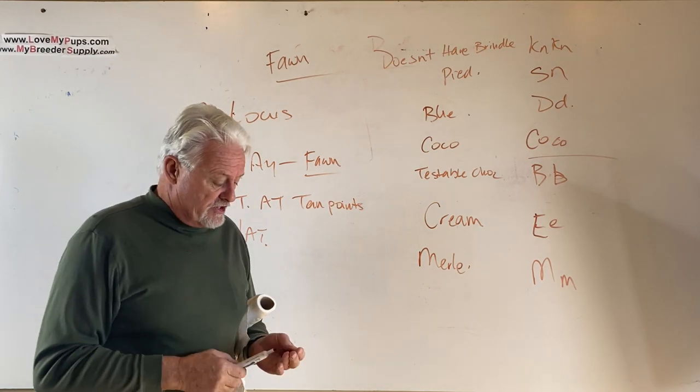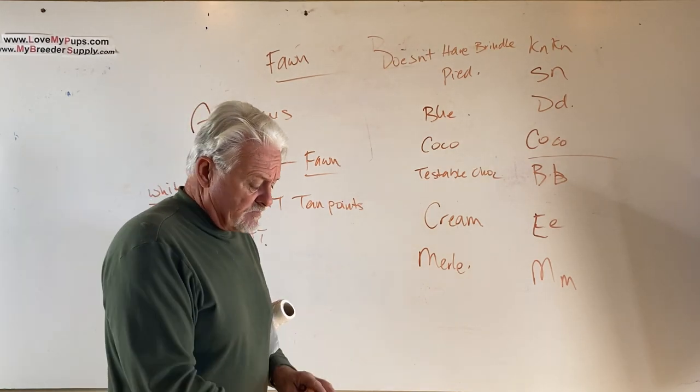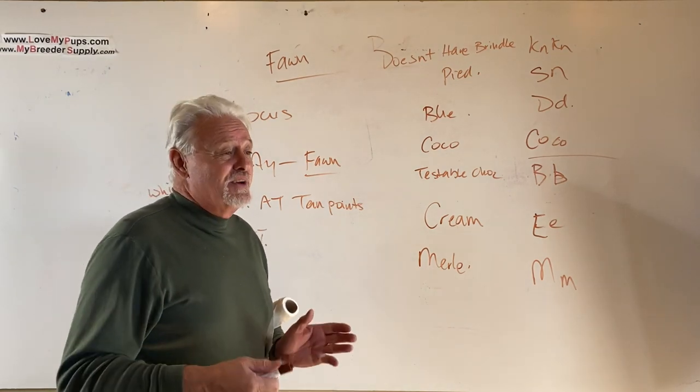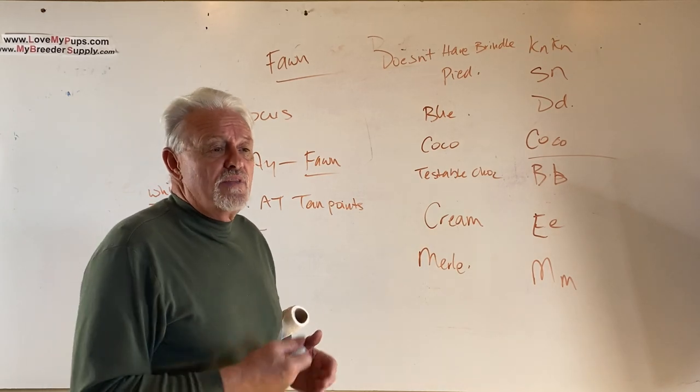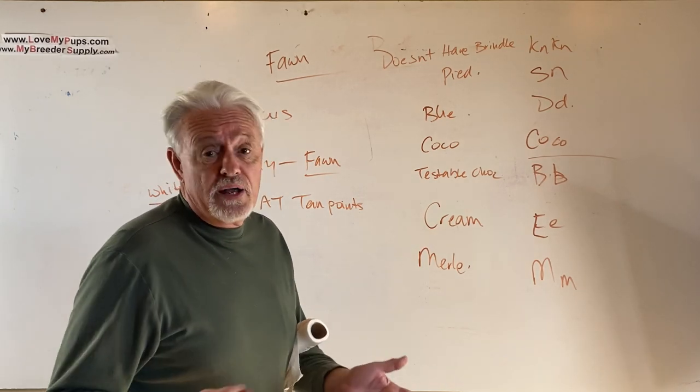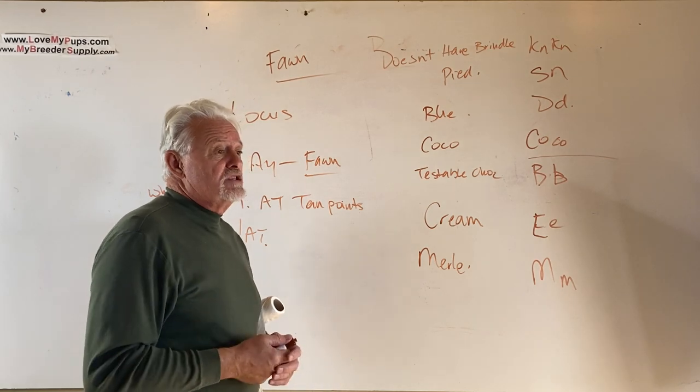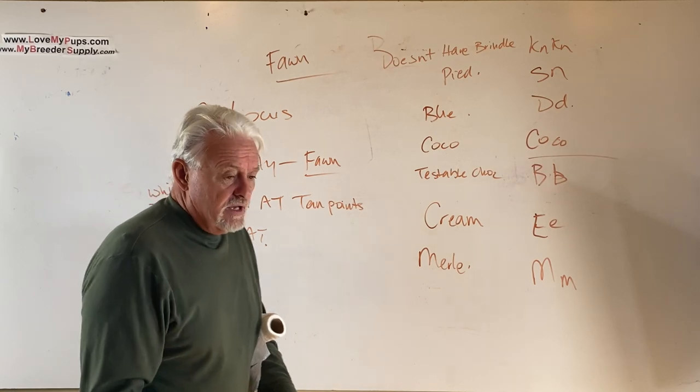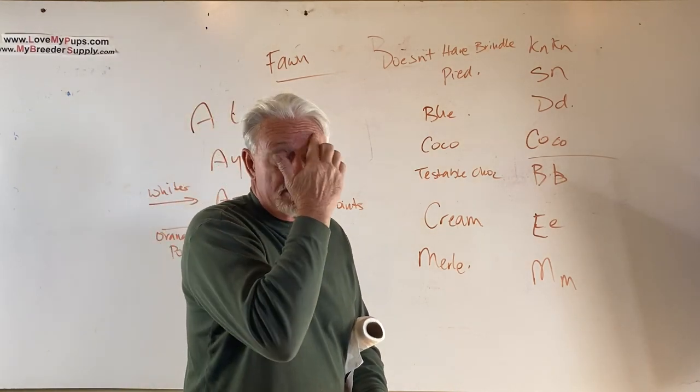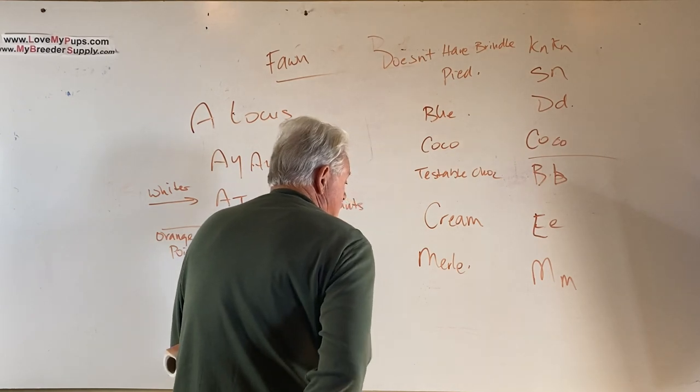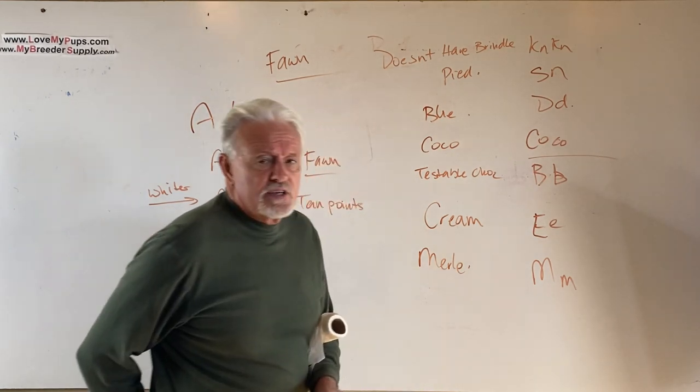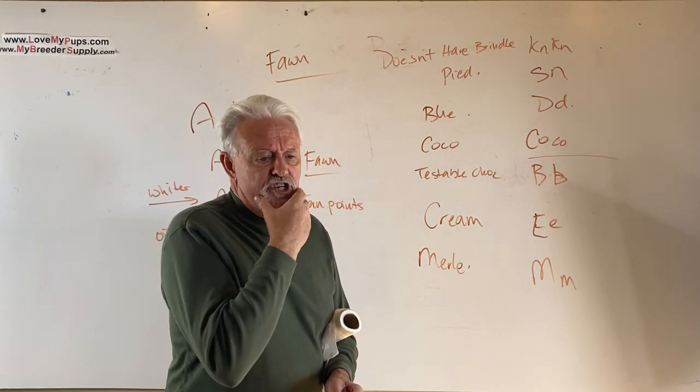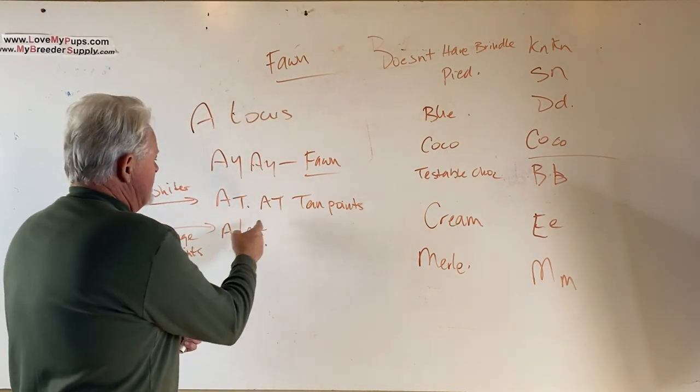But a dog that has tan points is going to be pretty obvious unless it's an extreme pied. You can have an extreme pied tan pointed dog where the area where the tan points would be is now white and it won't show up. But for the most part, a tan pointed dog would be pretty obvious because it'll have tan on its paws on the bottom. It'll probably have some markings above its eyes. It'll have a tan point on its rump right where its tail is, and typically you'll see some tan points maybe on its cheeks as well.